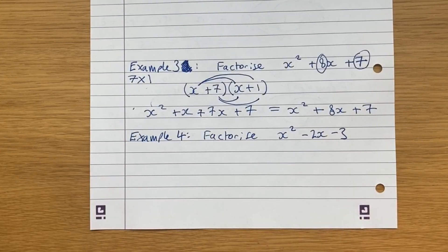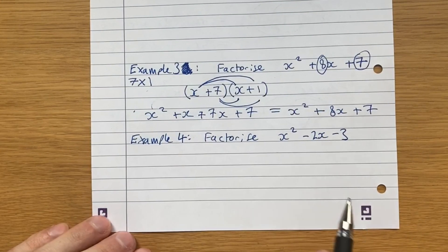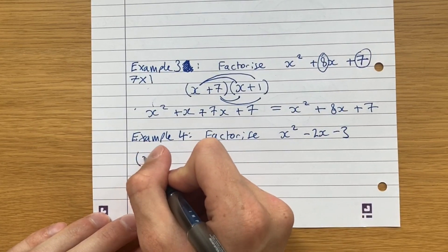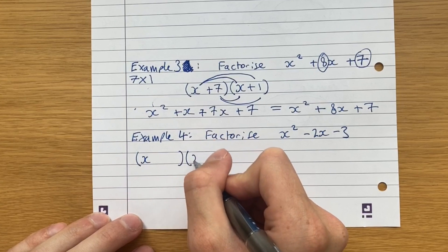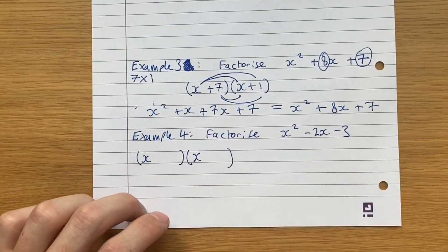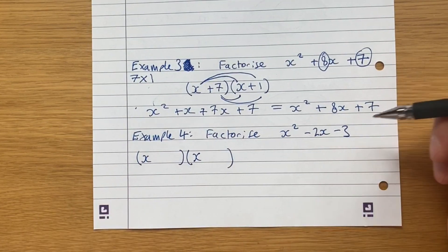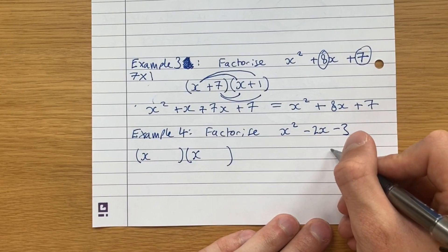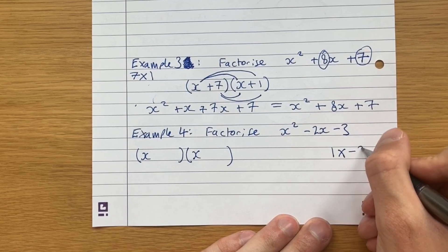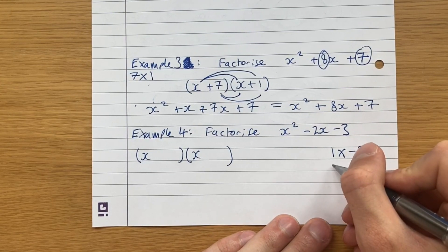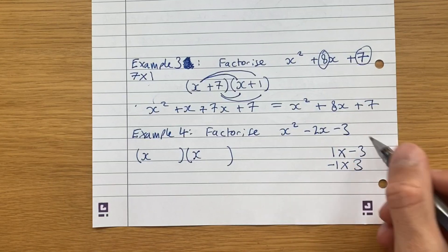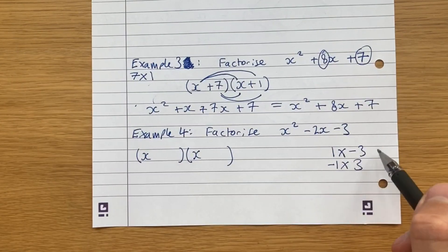Okay, another example here. This one's a bit different because we have minus signs. So we've just got to be aware of that. So because it's still only a 1 in front of the x, we can safely say that it will be x and x. So now let's think of all the factors of minus 3. Or I should say the pairs of factors. So minus 3 can be reached by 1 times minus 3 or minus 1 times 3.